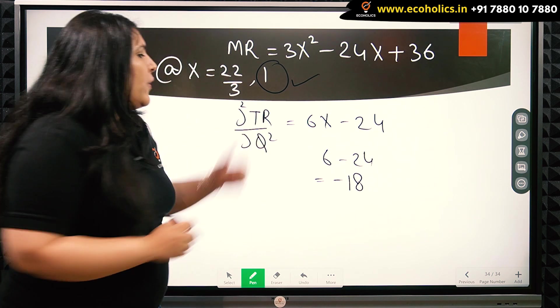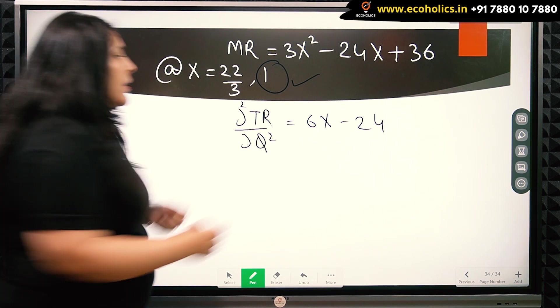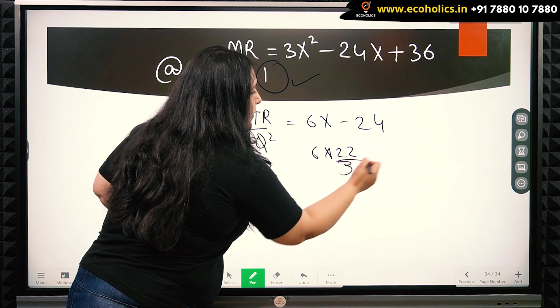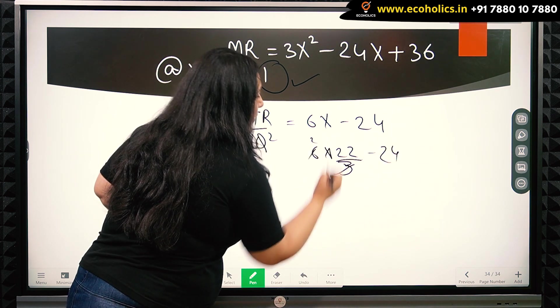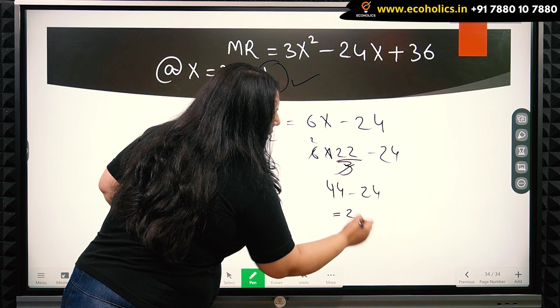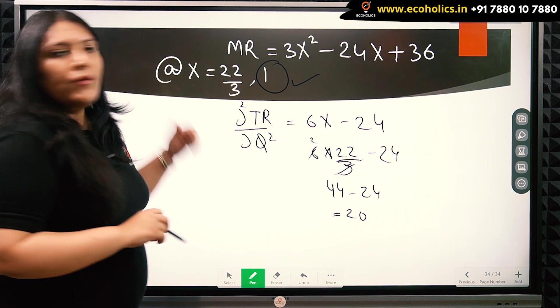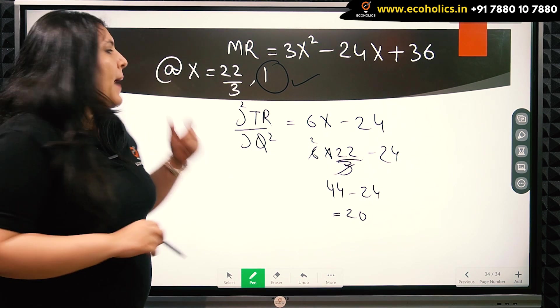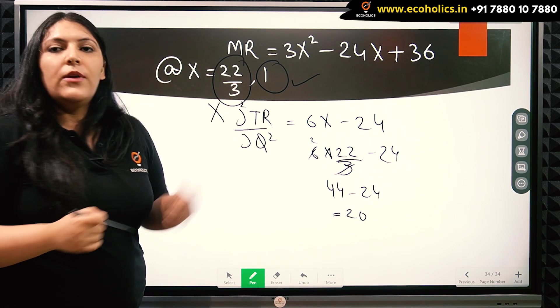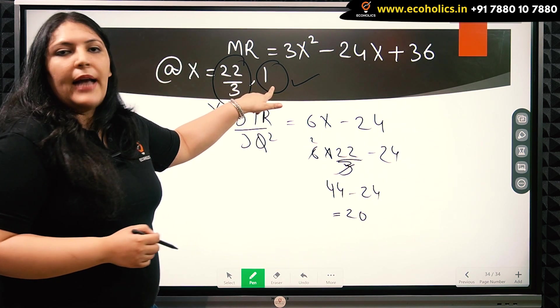Now if we follow the same approach and put the value of x equal to 22/3, we get 44 - 24 which is 20, which is a positive value. This means that here the value will not be accepted or maximized. So the monopolist will not be producing at 22/3. The monopolist will choose to produce at the quantity 1.